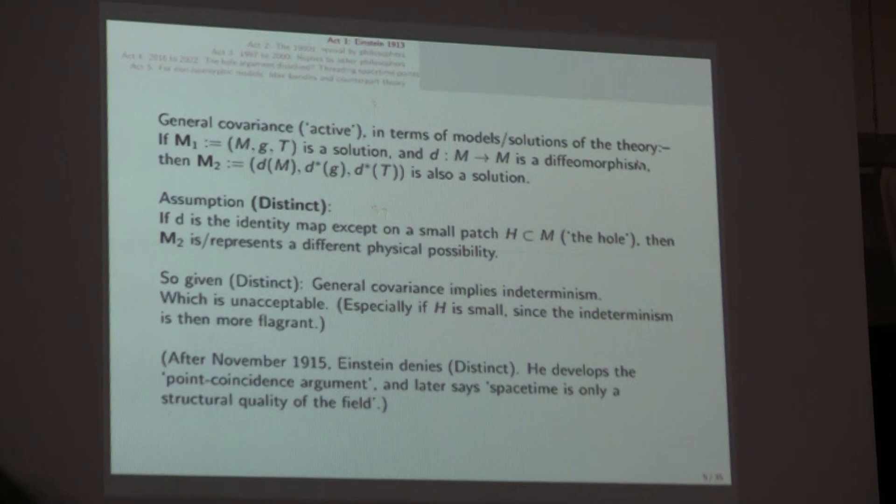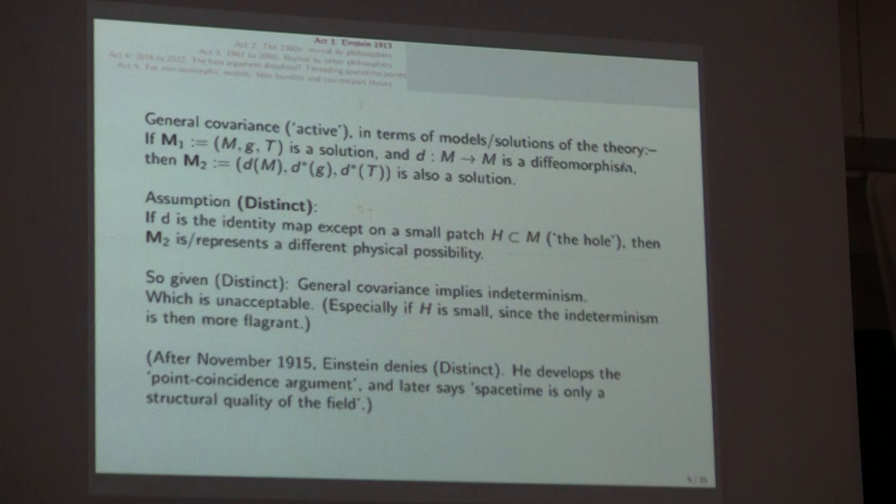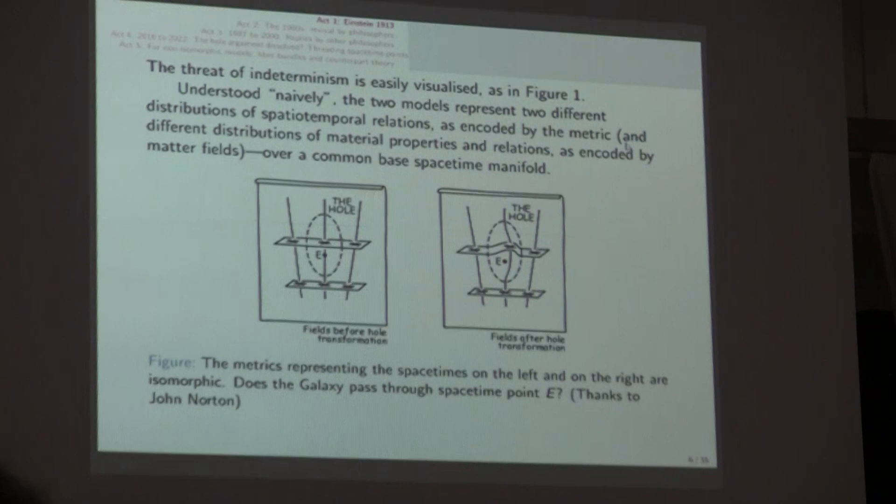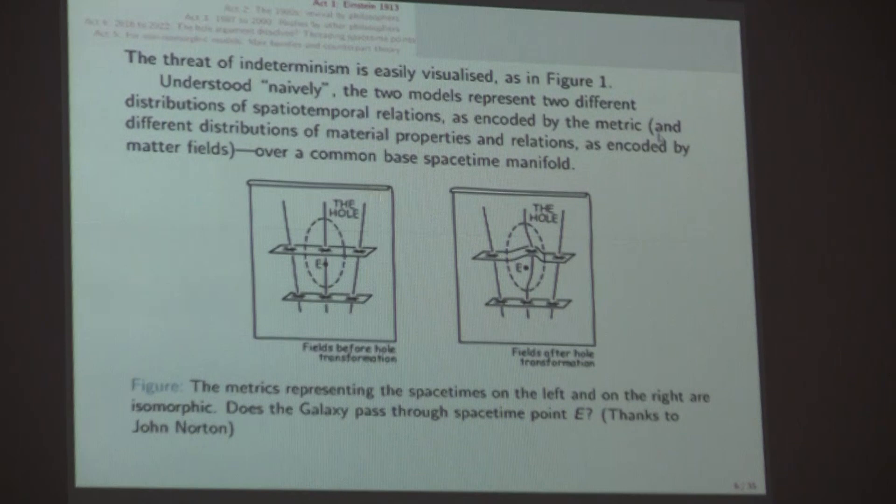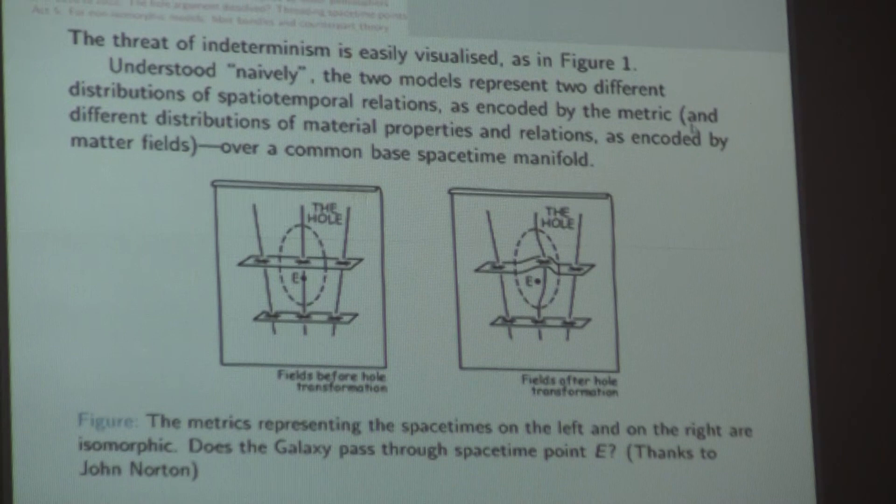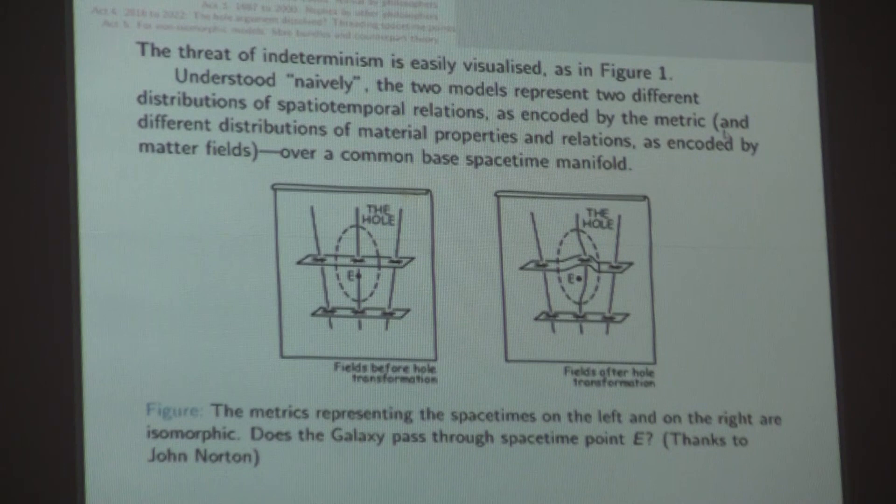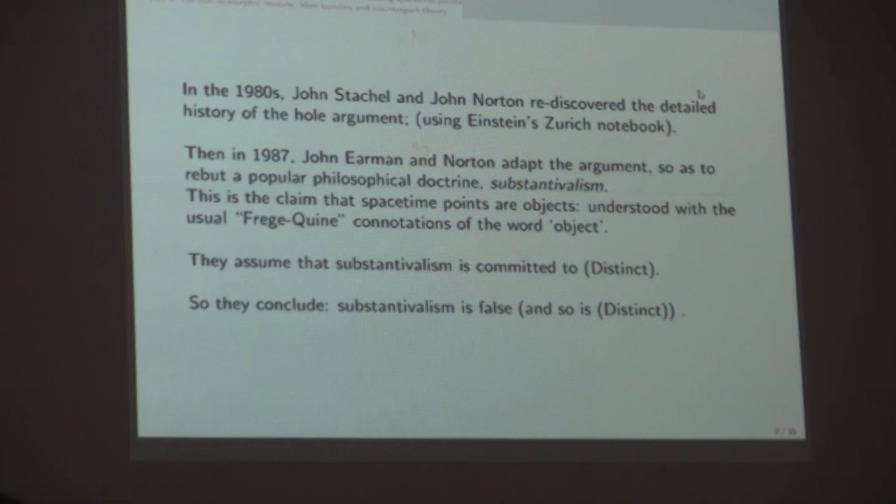After 1915, he had to re-evaluate his hole argument against general covariance. And in correspondence, especially with Ehrenfest, he developed what's called the point coincidence argument. In 1922, he had the famous quote that spacetime is only a structural quality of the field, putting the fields first. Anyway, the idea of the argument is easily visualized. He just naively understood these two models represent two different distributions of spacetime relations.